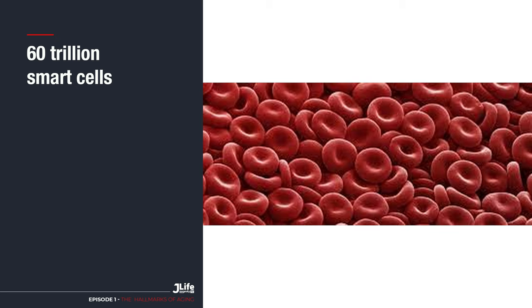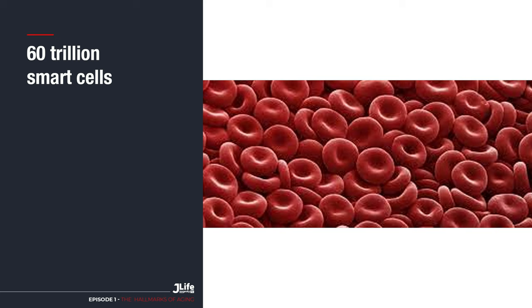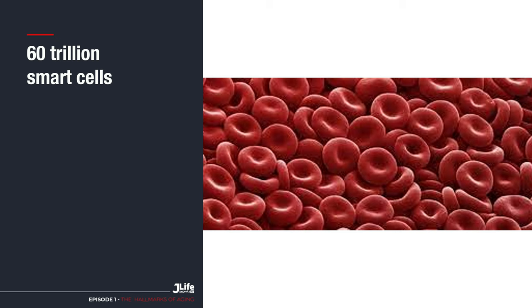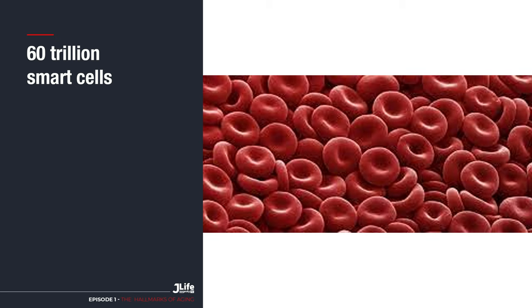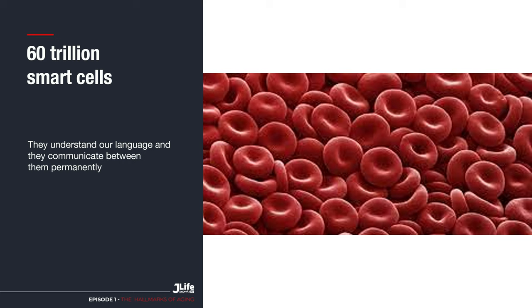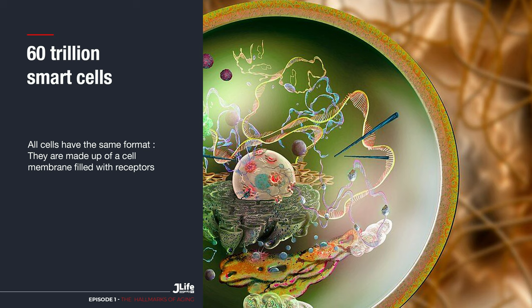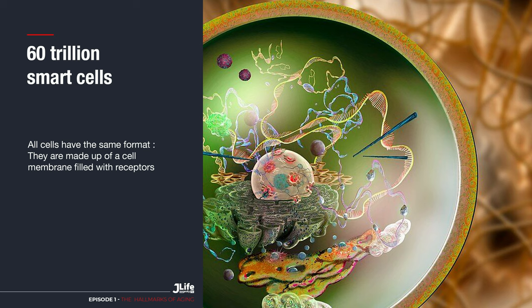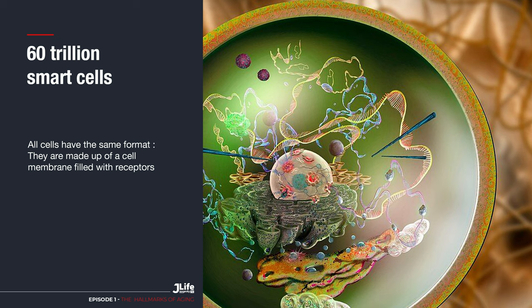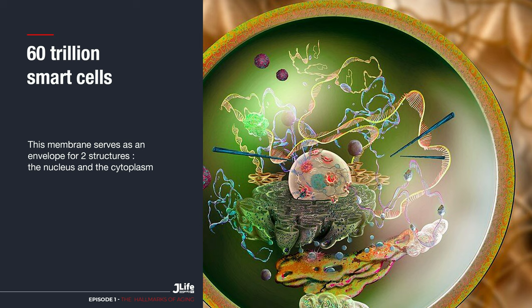To understand cellular aging, give me two minutes to explain how a human cell works. We have about 60 trillion smart cells. I say smart because they understand our language and they communicate between them permanently. With rare exception, all cells have the same format. They are made up of a cell membrane packed with receptors that control all the entry points.